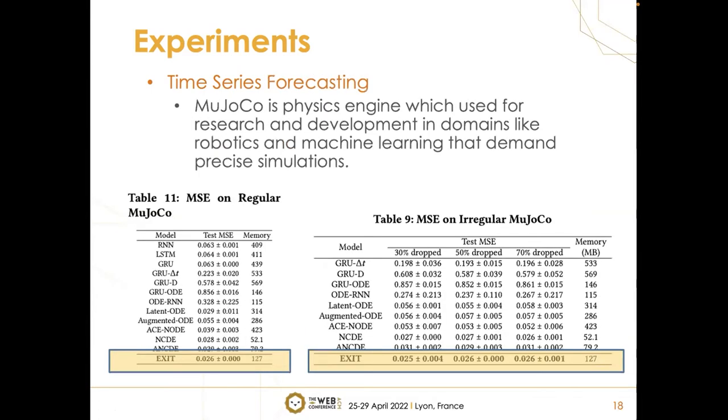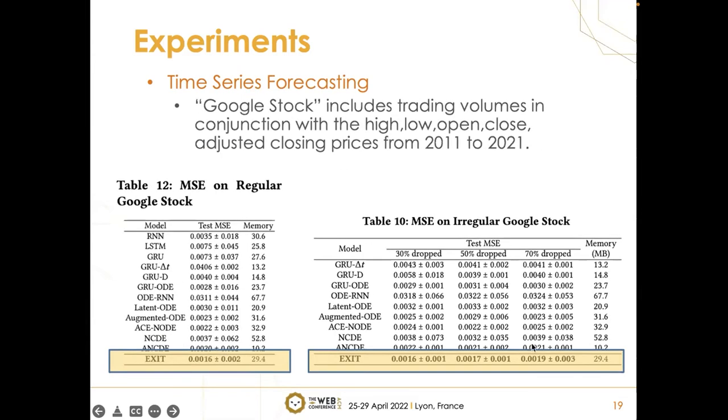In time series forecasting, we use a Mujoco dataset. This dataset is a physics engine which is used for research and development in domains like robotics and machine learning that demand precise simulations. We randomly dropped 30, 50, 70% and also tested on regular dataset. Finally, we test forecasting tasks on Google stock dataset. To create a more challenging environment, we use Google stock data from 2011 to 2021, which includes COVID situations. We think including 2021 makes the data more fluctuating. We randomly dropped 30, 50, 70% and tested on regular. In all the settings, we show the smallest error across every setting.